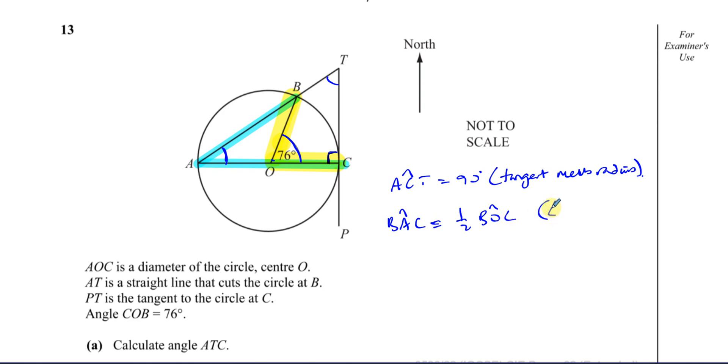Because we can say angles on the same arc, and one at the center. So we can say that BAC, therefore, is going to be 76 over 2, which is 38. That's the angle BAC, that's 38 degrees.